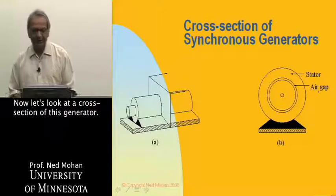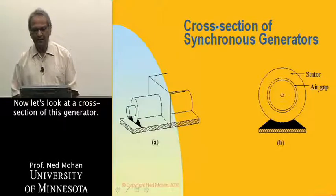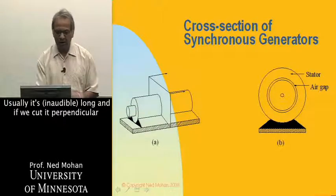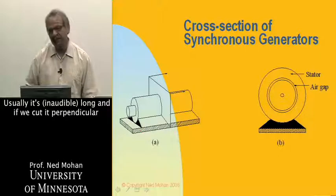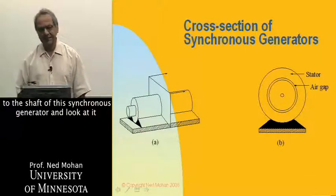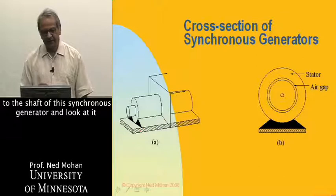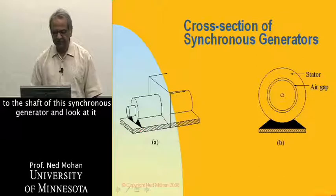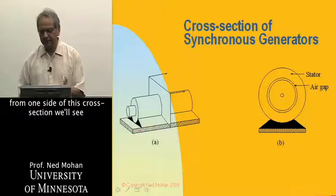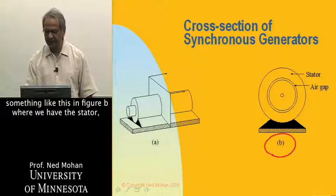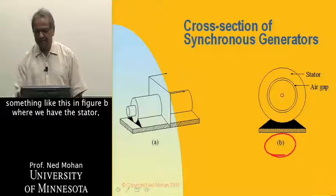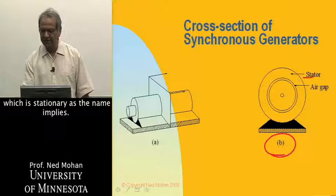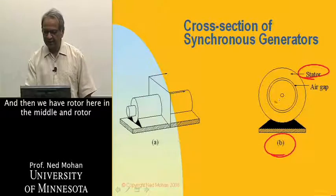Now, let's look at the cross-section of this generator. Usually, it's long, and if we cut it perpendicular to the shaft of this synchronous generator, and look at it from one side, this cross-section, we'll see something like this in figure B, where we have the stator, which is stationary, as the name implies.